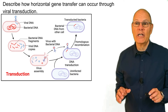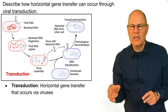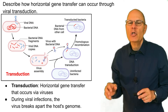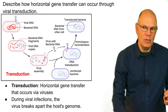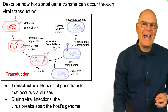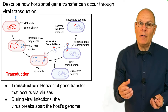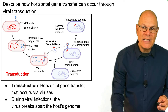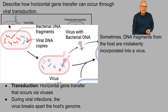Describe how horizontal gene transfer can occur through viral transduction. Transduction is a kind of horizontal gene transfer that occurs through viruses, specifically through mistakes in the viral replication cycle. During viral infections, the virus breaks apart the host's genome. Here's a virus injecting its DNA into its victim. One of the first things that happens is that the infected cell's DNA is broken apart. The virus then uses the cell's molecular machinery to create new viral genes and proteins, which become assembled into new viral particles. But during a mistake in the process, DNA fragments from the host are mistakenly incorporated into a virus.